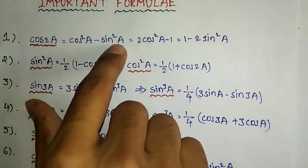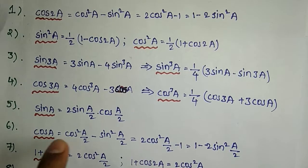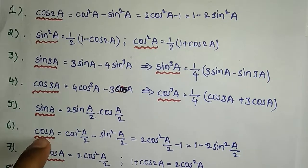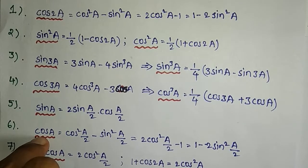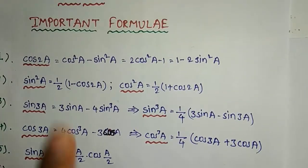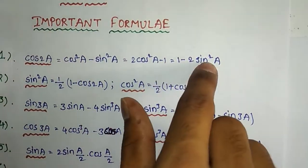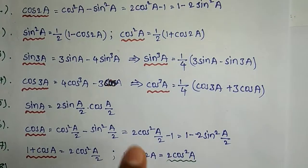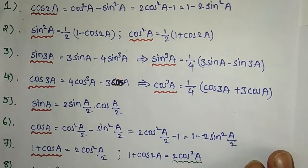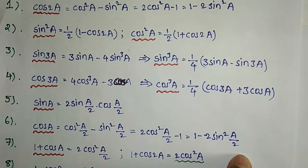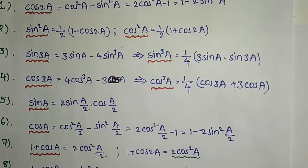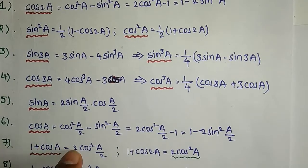The cos2a formula is cos2a equals cos²a minus sin²a. But here we have cosa, so we replace 2a with a, meaning a becomes a/2. So cosa = cos²(a/2) minus sin²(a/2). Similarly, 1 plus cosA equals 2cos²(A/2).